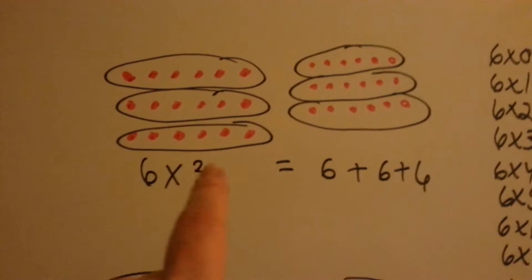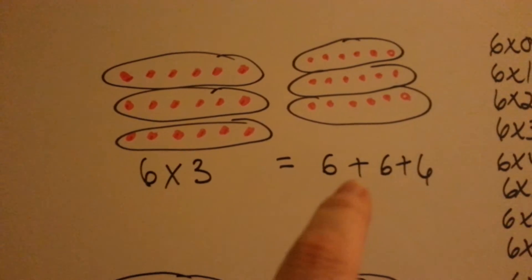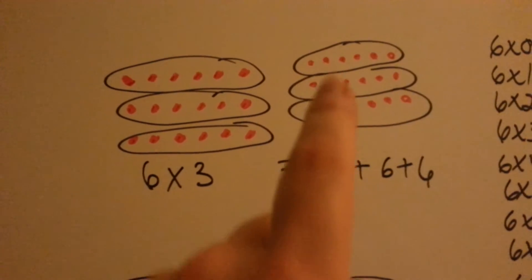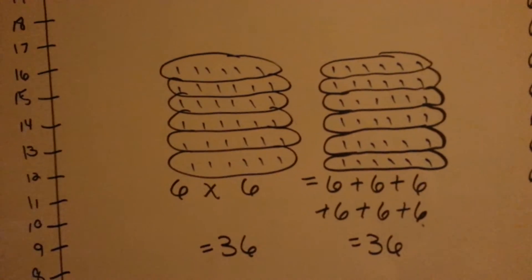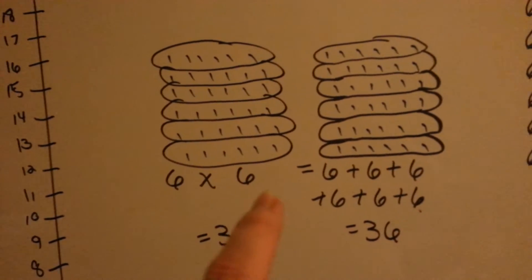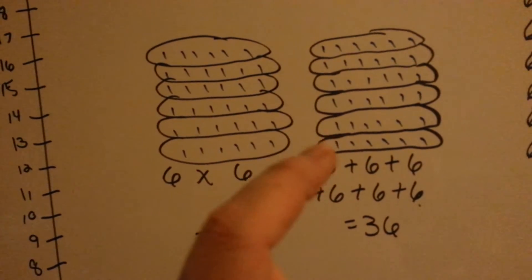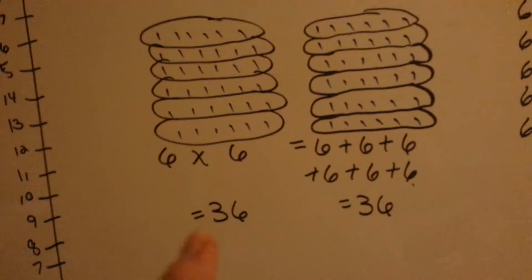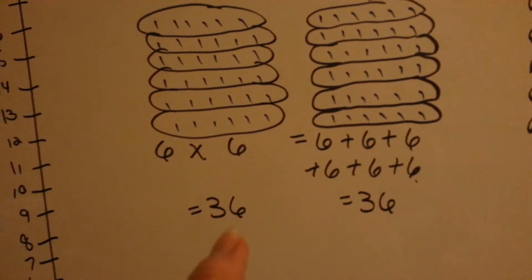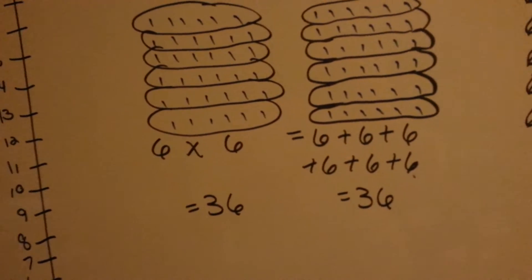Let's look at the 6 times table. That's saying how many times are you going to add 6's together. 6 times 3 is the same thing as doing it 6 times: 6 plus 6 plus 6 plus 6 plus 6 plus 6. 6 times 6 equals 36, and all these 6's added together equals 36.